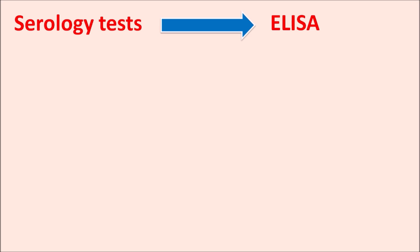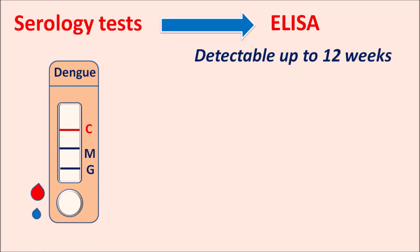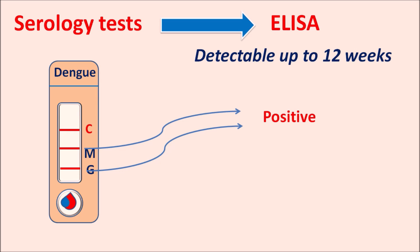The second type of tests are serology tests. These tests mainly use the ELISA technique — enzyme-linked immunoassay — to detect specific antibodies to the dengue virus. These antibodies can be detected up to 12 weeks after the onset of infection. A rapid kit is used where IgG and IgM can be detected. Serum and buffer are added to the sample well. If both the IgM line and IgG line become red, it indicates positive results for both, confirming the patient is infected with dengue virus.